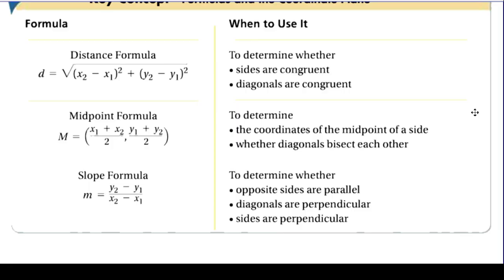If we ever talk about parallel or perpendicular lines, whether they're sides or diagonals, we're going to use the slope formula. If we can show that two lines have the same slope, we can prove that they are parallel to each other. If we can show that two lines have opposite reciprocal slopes, we can show that they are perpendicular to each other.